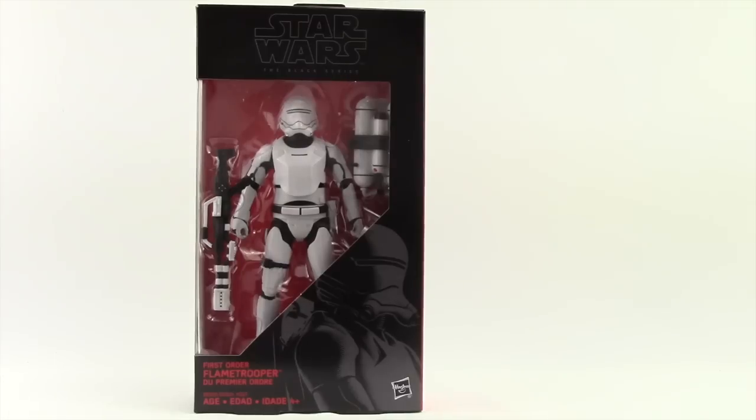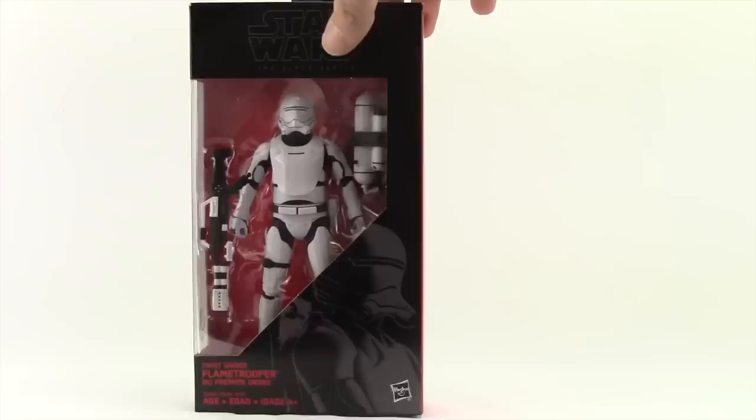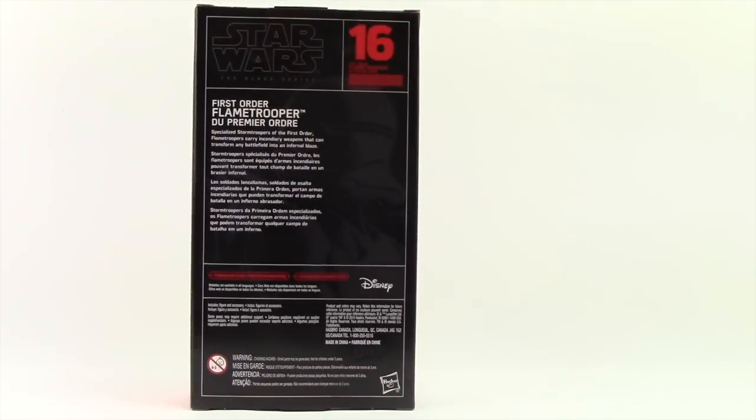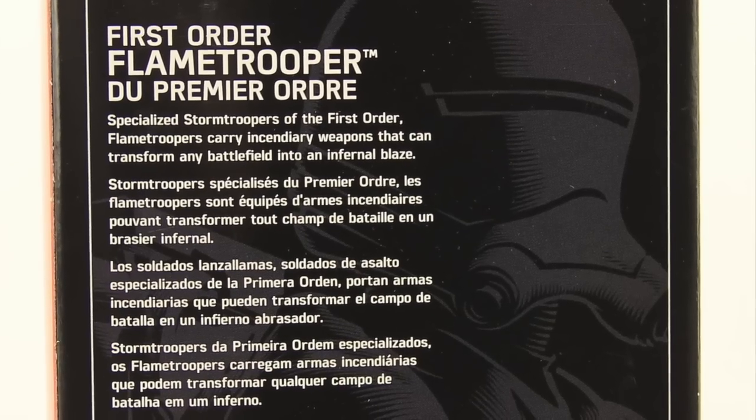It comes packaged in the same style we've seen with other Black Series figures—the black box with the figure clearly displayed against a red background. Down below you have an image of the character and the name. On the side, that red border tells us this is figure number 16 in the series. On the back we have a brief bio in multiple languages.